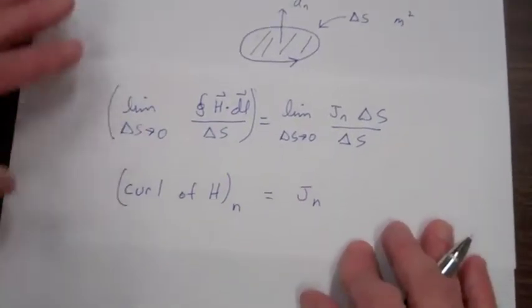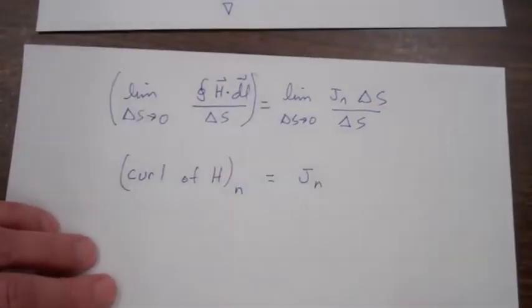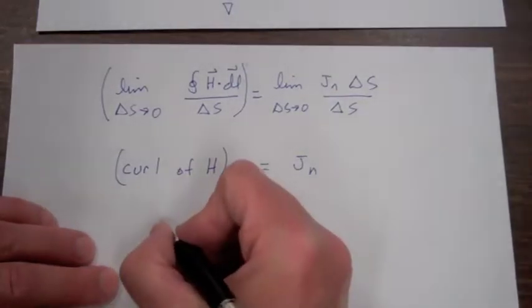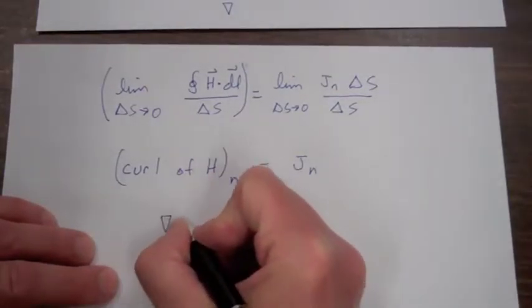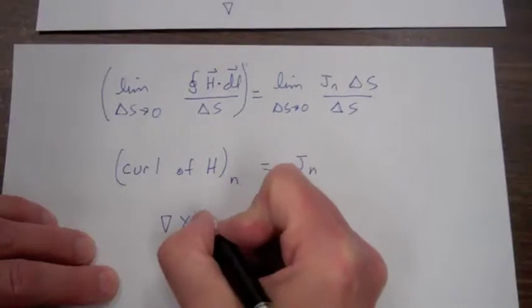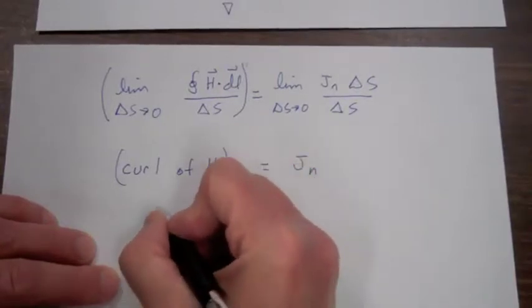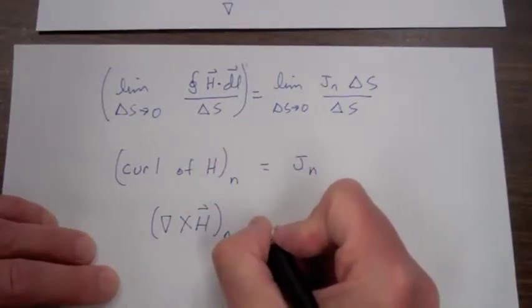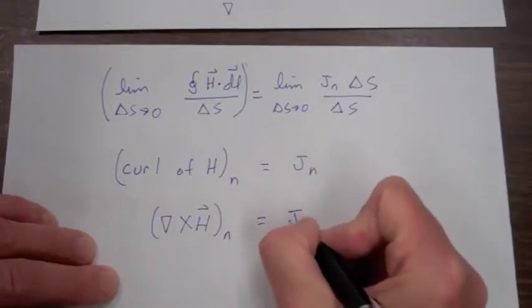And this operation of curl of vector H is written with this nomenclature curl of H. We want the component in the n direction, which is equal to J sub n.